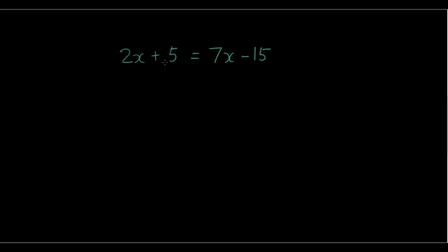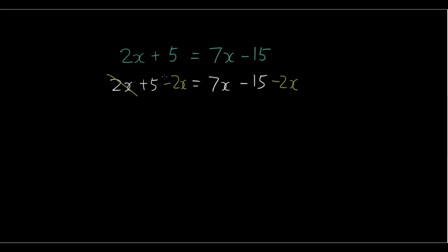Firstly, what we want to do is make all the x's go on one side and all the numbers go on the other side, and we do this by balancing. The first thing we're going to do is minus 2x on both sides. So: 2x plus 5 equals 7x minus 15, and we minus 2x on both sides. 2x minus 2x cancel each other out, leaving 5 on the left, and 7x minus 2x becomes 5x, so we have 5x minus 15.